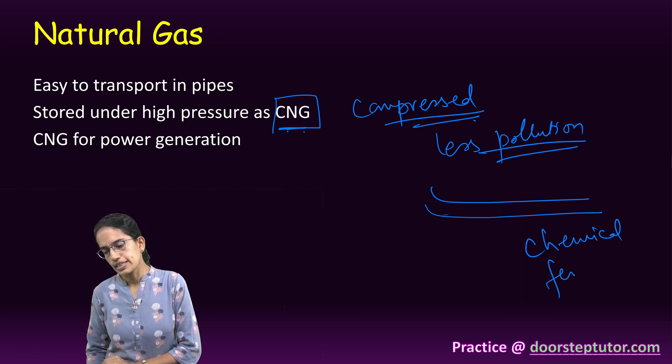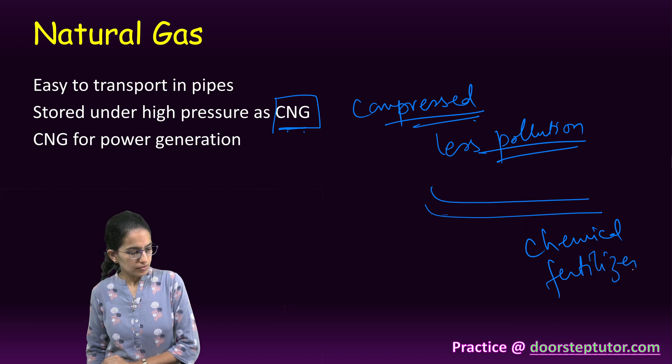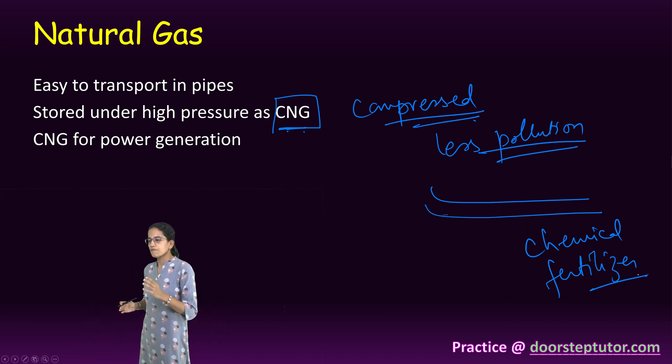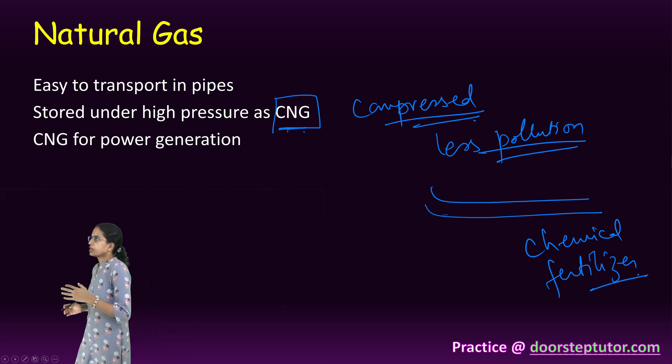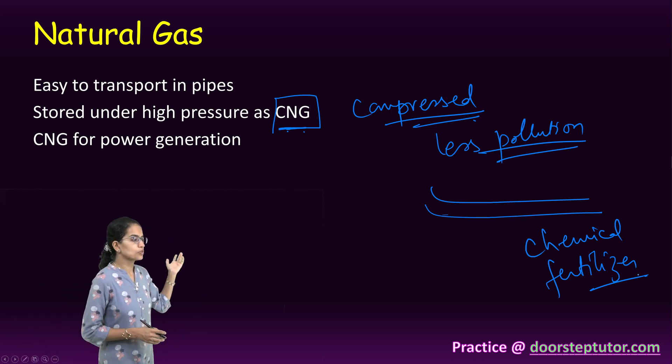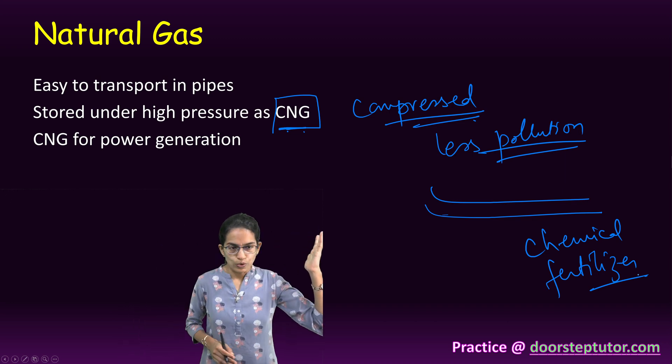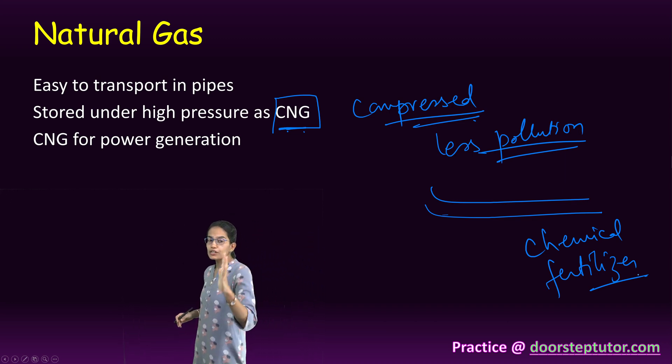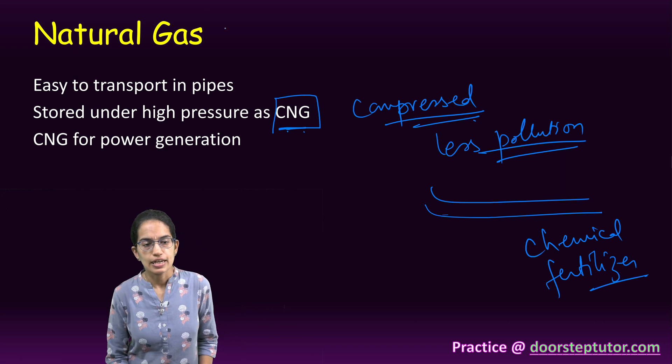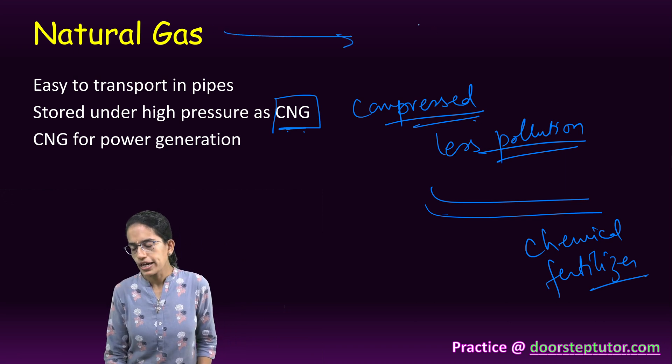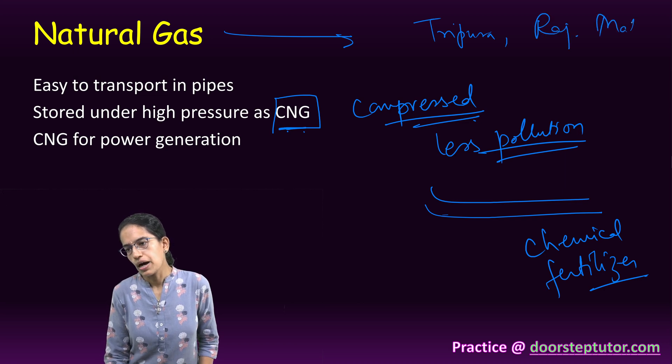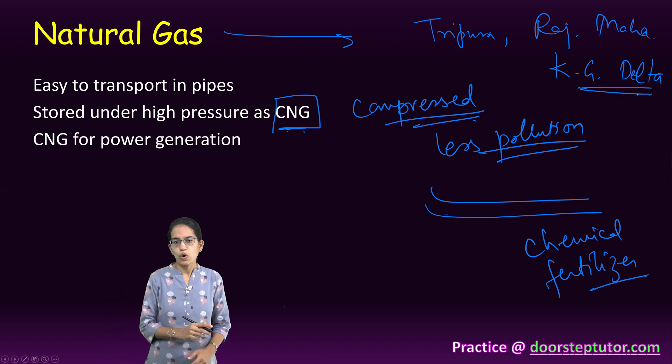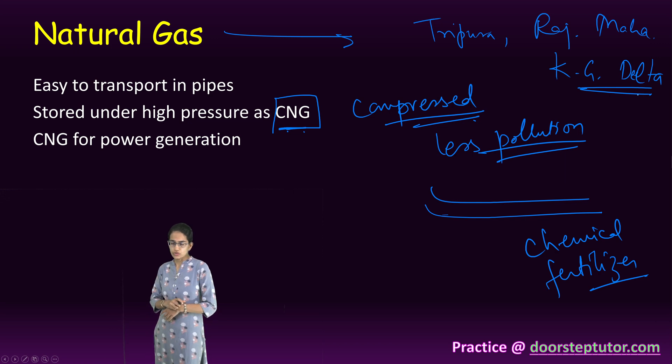Natural gas is also used as one of the major materials for chemical industry and fertilizer industry as well. Besides this, one very important thing is burning causes pollution, and this pollution can ultimately lead to global warming. We find the deposits of natural gas in India in the region of Tripura, Rajasthan, Maharashtra and Krishna Godavari Delta, where you have oil shale deposits as well as natural gas deposits.